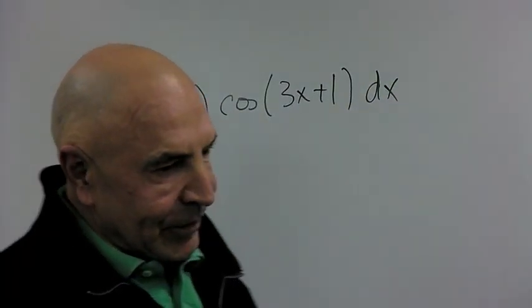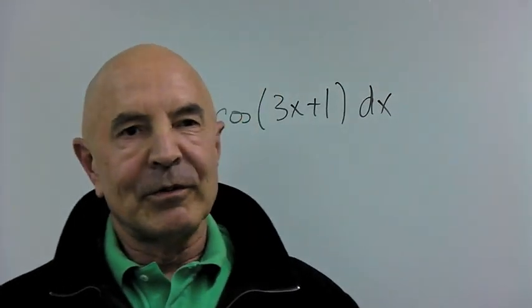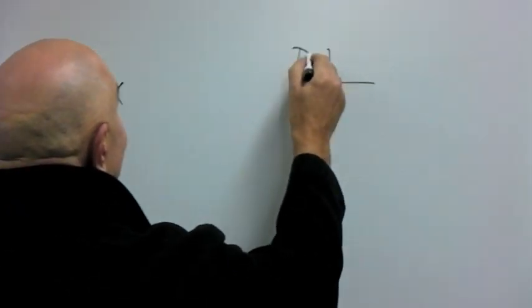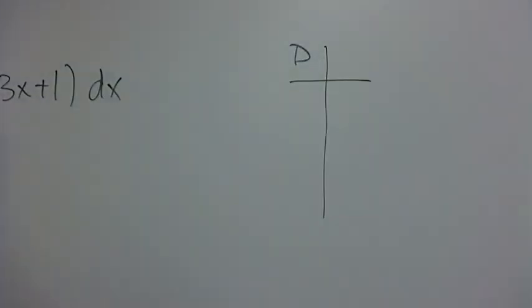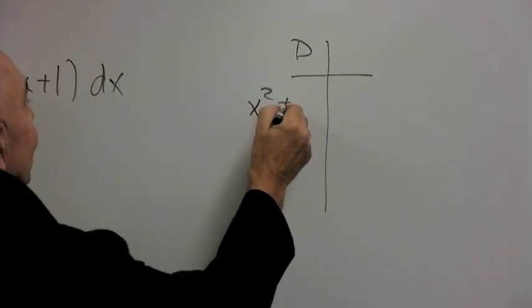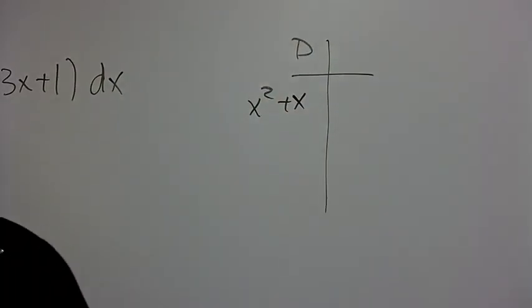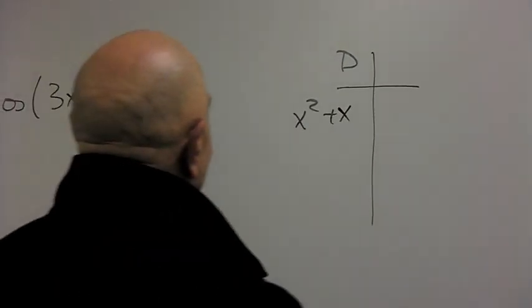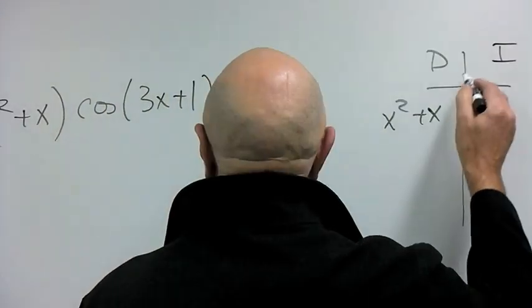And if you remember from the first part, what we did was put the polynomial in the D column. We made a D column and an I column. And the polynomial went to the D column because if you differentiate it a couple of times, it goes away, becomes 0. And in the I column, we'll put the cosine.